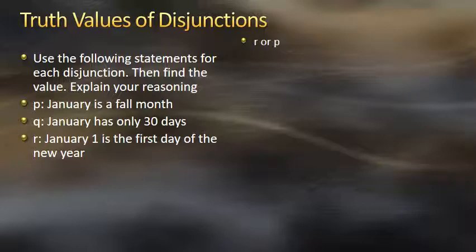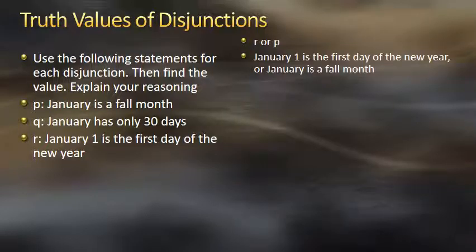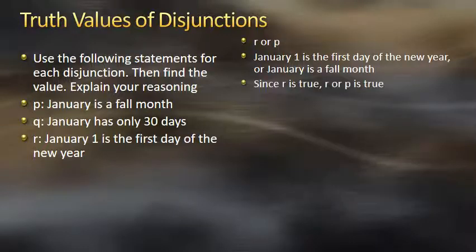The first disjunction is R or P. R is 'January 1 is the first day of the year' and P is 'January is a fall month.' The disjunction reads: 'January 1 is the first day of the new year OR January is a fall month.' This is going to be true because R is true. Even though 'January is a fall month' is not true, since the first statement R is true, the disjunction is true.